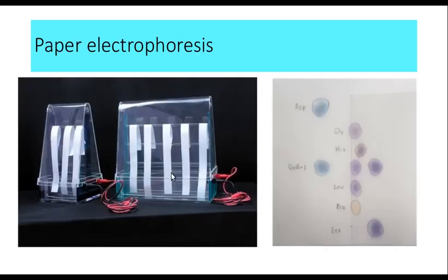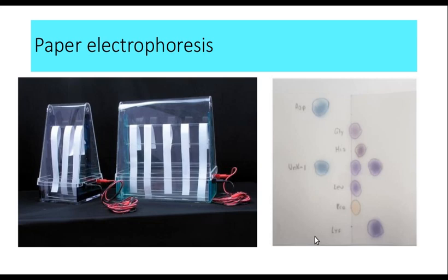Then paper electrophoresis was tried. The sample was applied to paper, and then subjected to electricity. The particles migrated along the paper, the current was removed, and the paper was preserved — so the separation was also preserved. This is an amino acid electrophoresis where you can see different bands. The separation was achieved and records were also obtained, but the clarity was not very good.